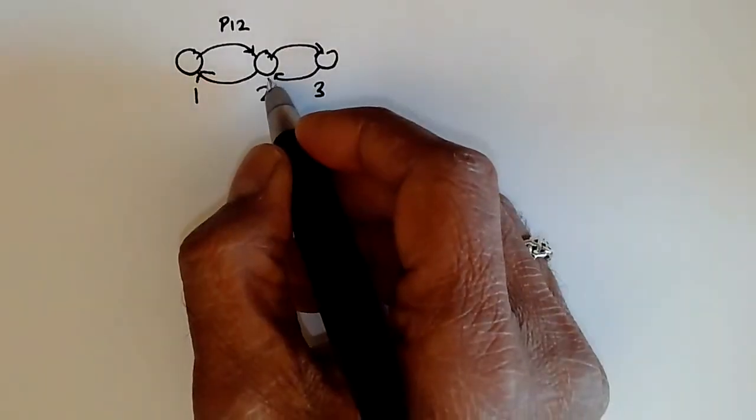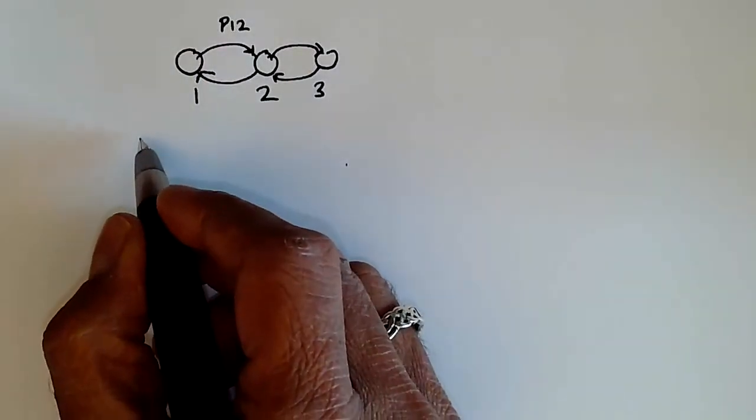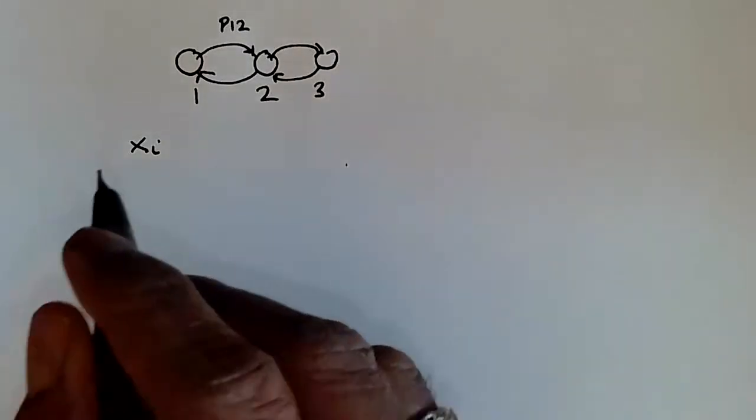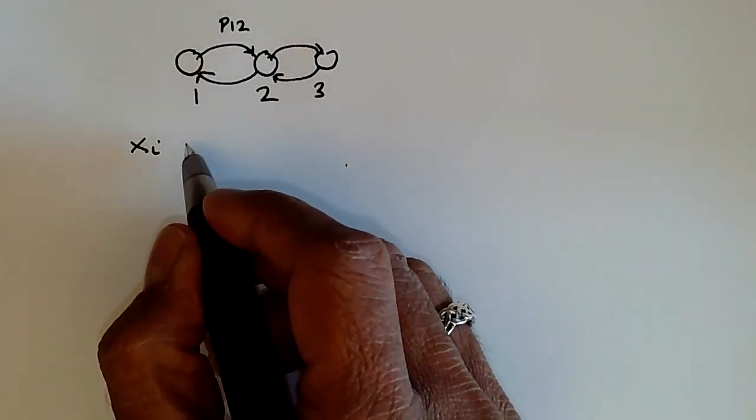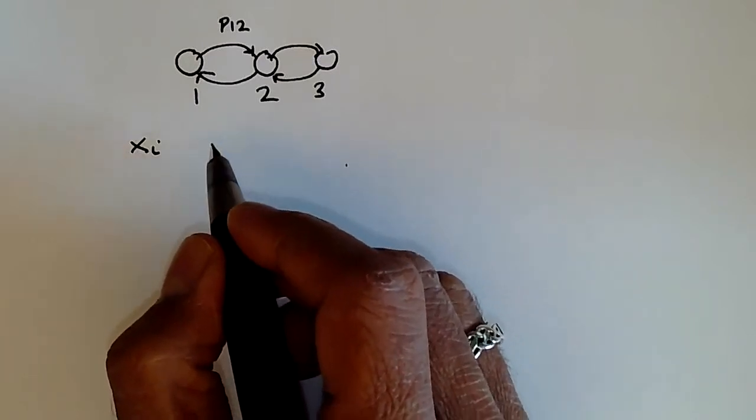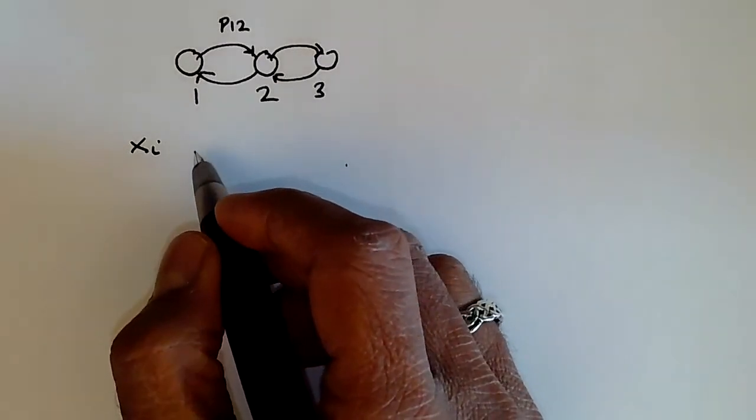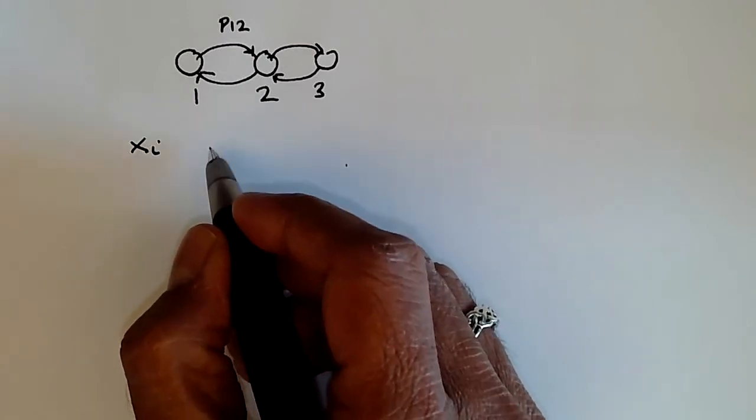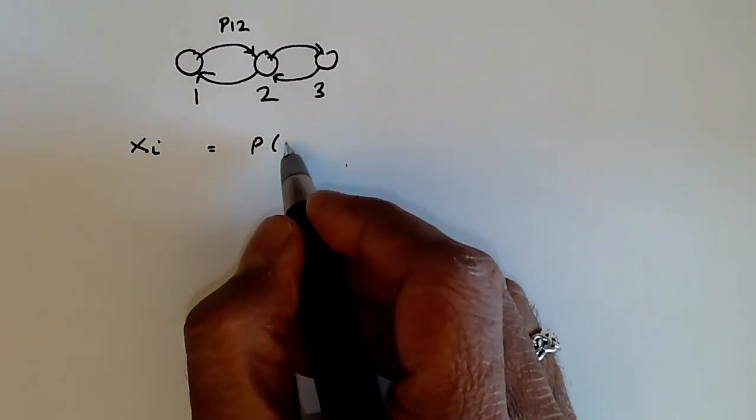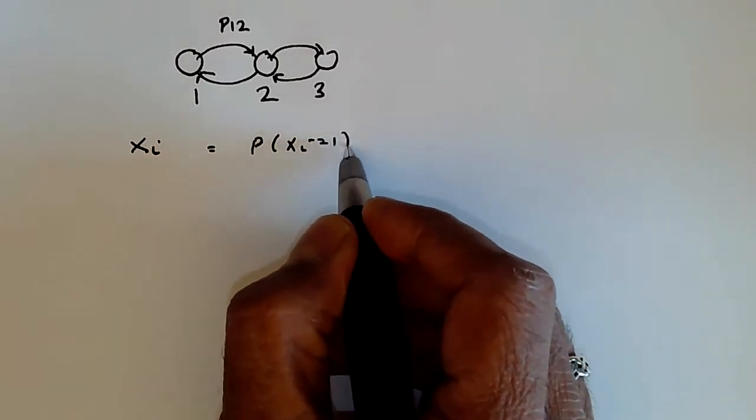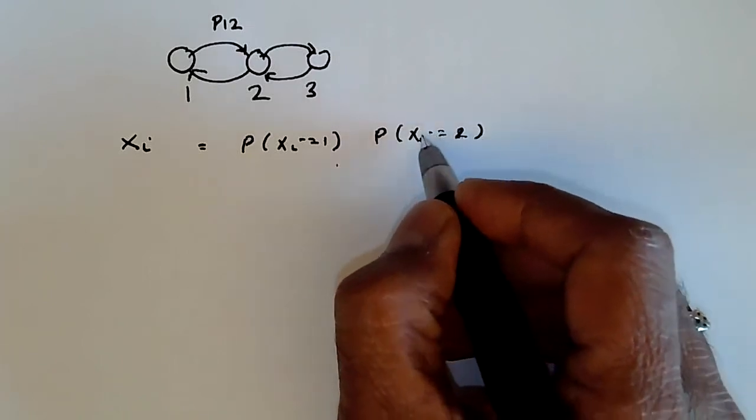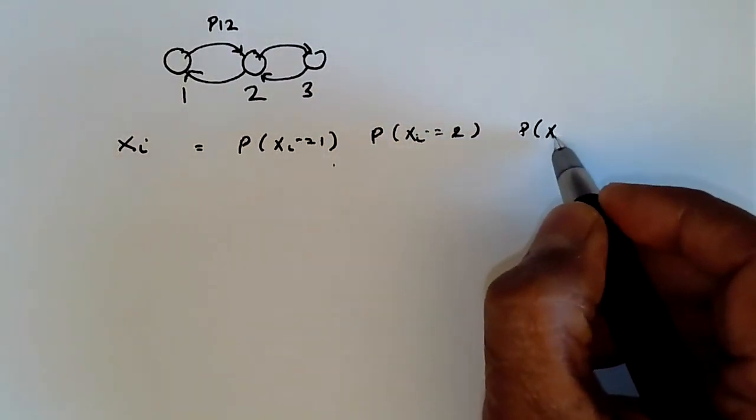Now, the Markov chain is represented by a family of random variables, x sub i. This is the definition of a stochastic process where this random variable, x sub i, takes on different probabilities which correspond to the probabilities of being in different states. So we have, for example, the probability that x_i equals 1, the probability that x_i equals 2, and the probability that x_i equals 3.